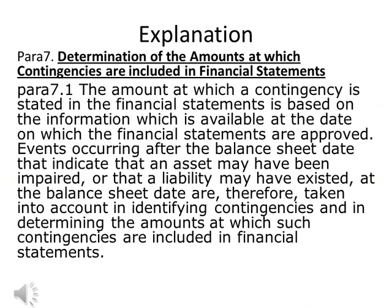Para 7.1: Determination of the amounts at which contingencies are included in financial statements. The amount at which a contingency is stated in the financial statements is based on the information which is available at the date on which the financial statements are approved. Events occurring after the balance sheet date that indicate that an asset may have been impaired or that a liability may have existed at the balance sheet date are therefore taken into account in identifying contingencies.